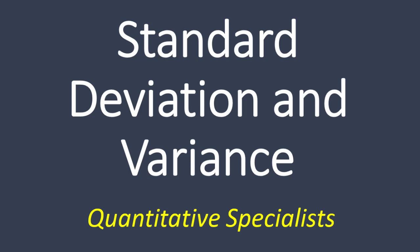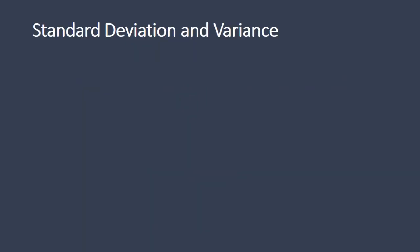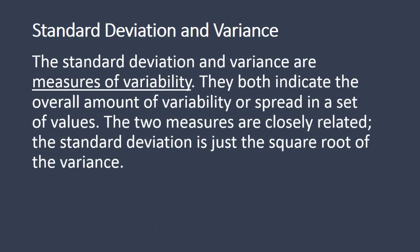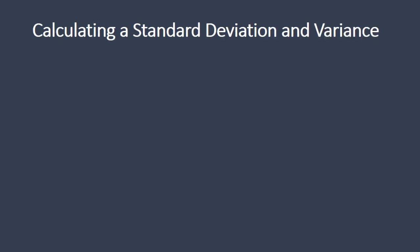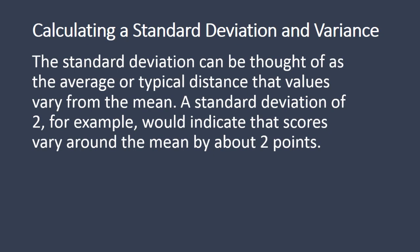In this video, we'll take a look at how to calculate the standard deviation and the variance. The standard deviation and variance are measures of variability — they both indicate the overall amount of variability or spread in a set of scores. The two measures are closely related; the standard deviation is just the square root of the variance. The standard deviation can be thought of as the average or typical distance that values vary from the mean.